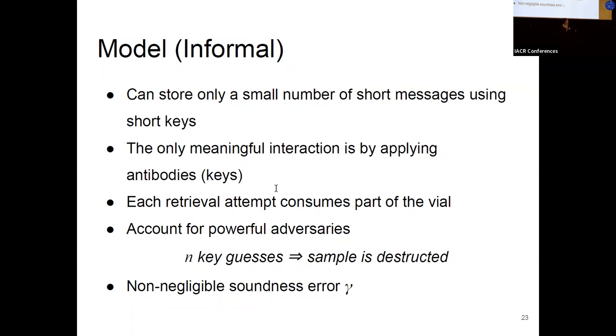And in our construction, although we set the amount of material or the parameters to allow the honest recipient to perform only one data query, we also account for the fact that maybe there is some adversary out there who's more powerful and can use the same amount to perform multiple data retrieval queries. We model that by saying that the honest party will be able to perform one query while the adversary or the malicious party can perform up to n data queries. So she can make up to n key guesses, if you will. At the end, our tokens are weak in the sense that they support non-negligible soundness error. So if you apply an incorrect key, but it is close enough to the correct one, there is a gamma chance of retrieving the correct message. And again, we need amplification here to get better security guarantees.